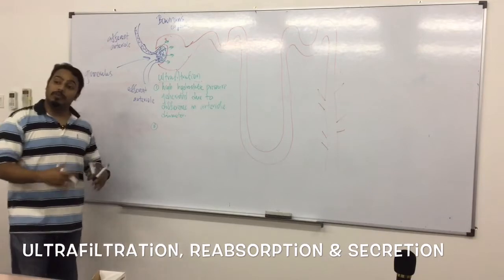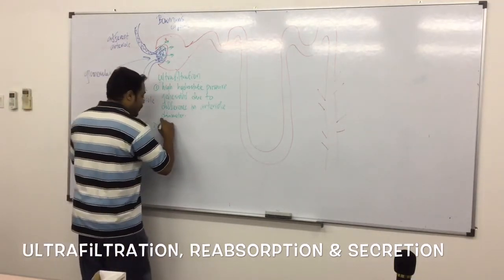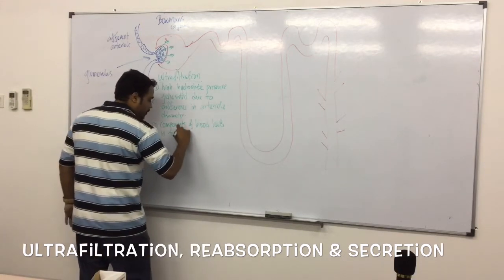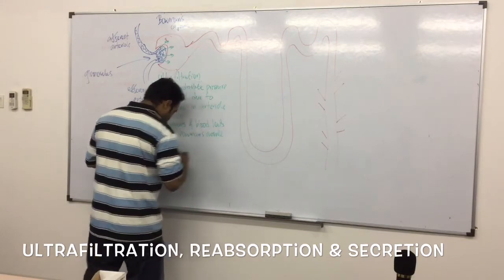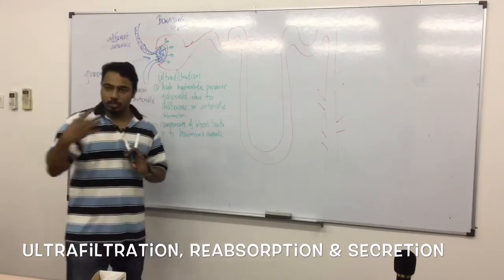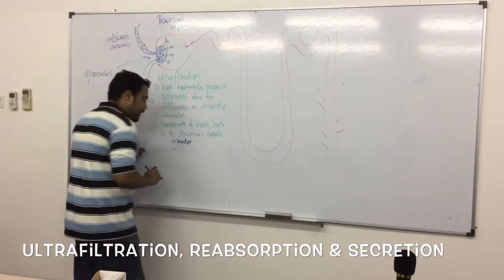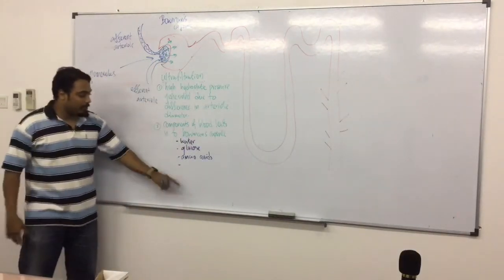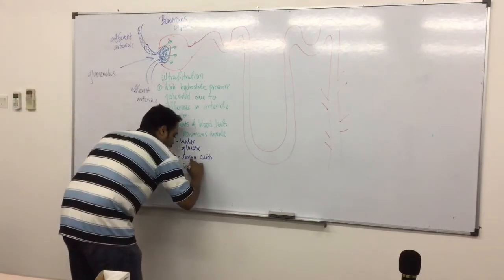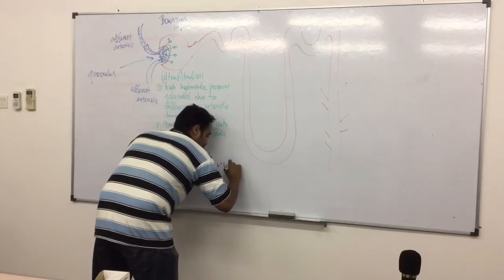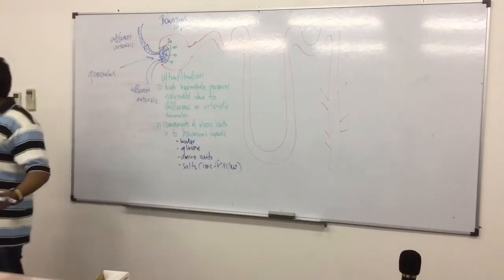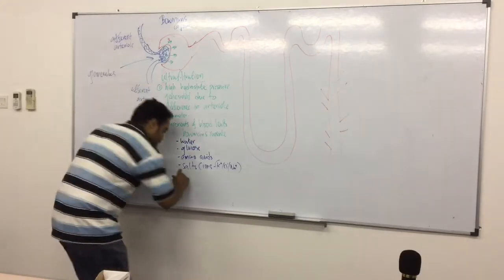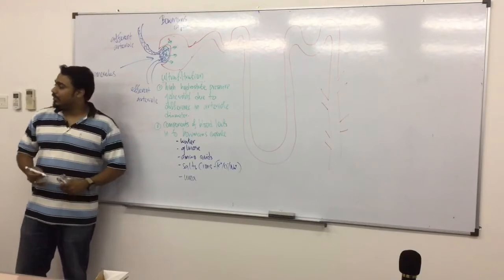Components of blood leak into the Bowman's capsule. It's very important to know what are the components that would actually leak. All that is water soluble will leak. So one of the major components is water. What else? Glucose. Amino acids. Salts — or you can call them ions, such as K+, Cl−, Na+. So all these ions will be leaking out; they follow water. Water, glucose, amino acids, salts, and most importantly, urea. We only need these major things that we will have to talk about.